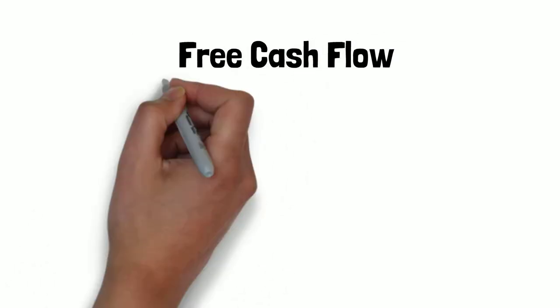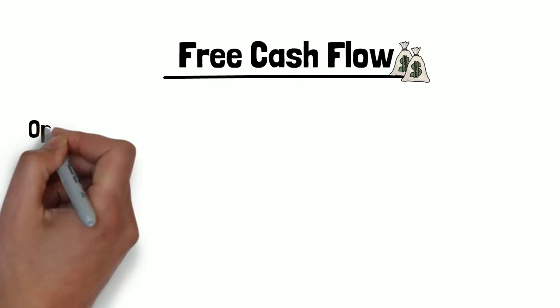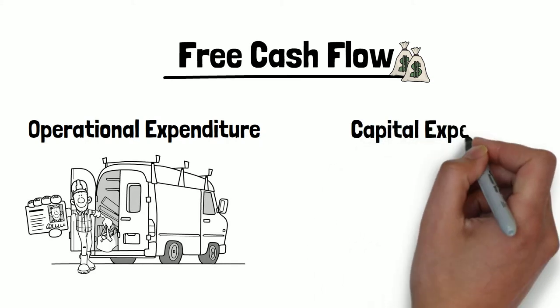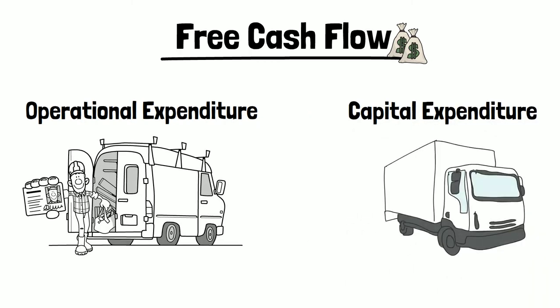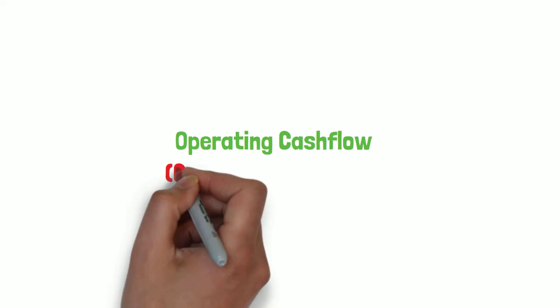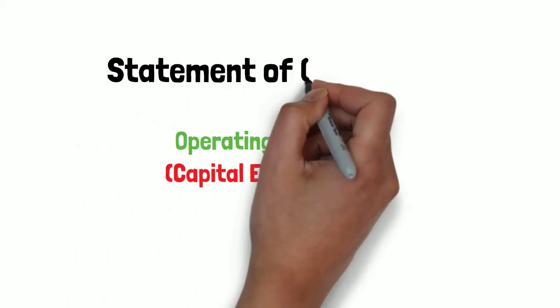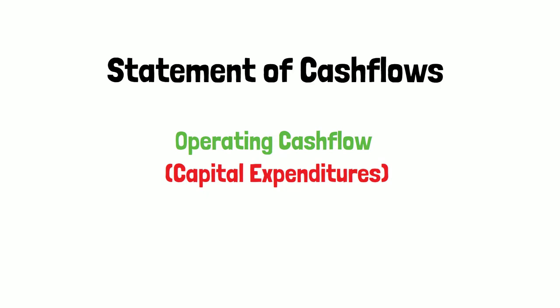Free cash flow is the amount of cash left over after a company has accounted for its cash outflows to support operations and maintain its capital assets. It's calculated by taking the company's operating cash flow minus capital expenditures, all of which can be found on the statement of cash flows.